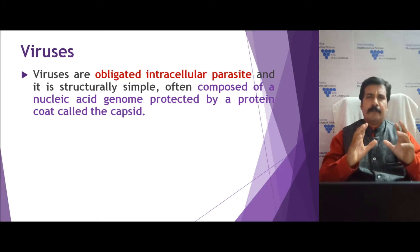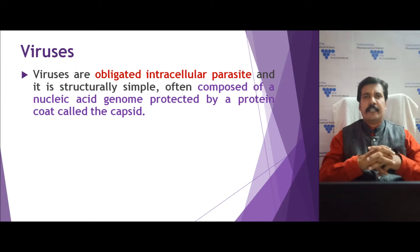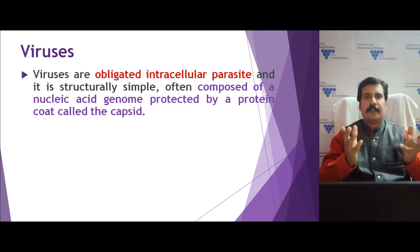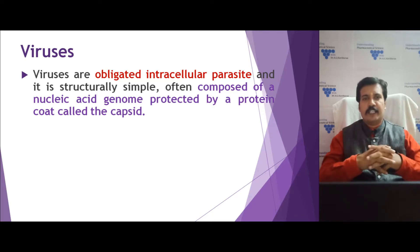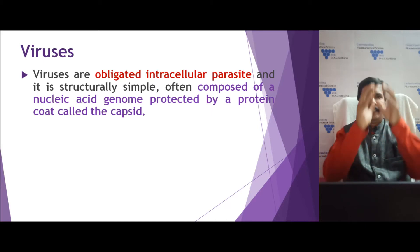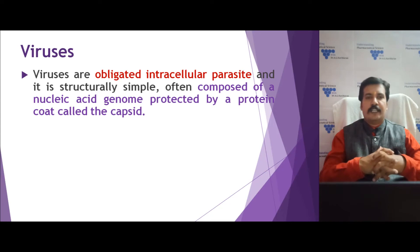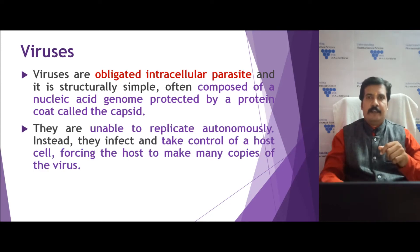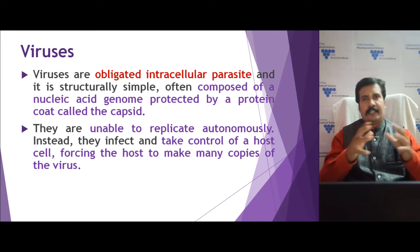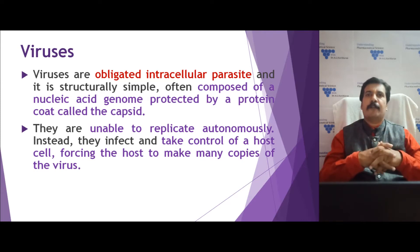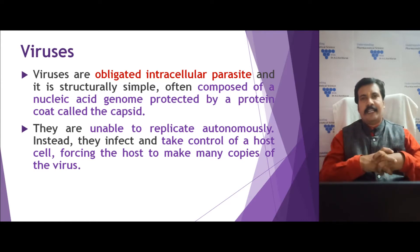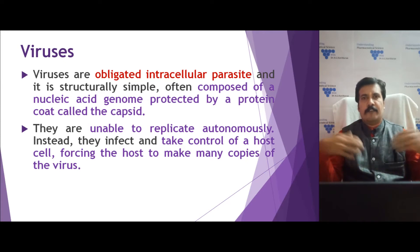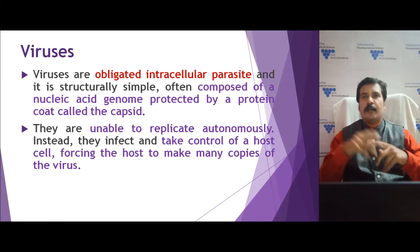A virus is a very simple entity. It is generally composed of only two chemicals: one is the genetic material, which may be RNA or DNA in nature, and second is a protein coat. The genetic material is kept inside a protein coat which is generally called a capsid. This virus is generally unable to replicate autonomously like a bacterium or a fungus, which can divide on their own, or even human cells, which can divide on their own. The virus, however, needs a host.